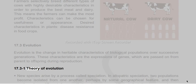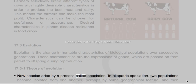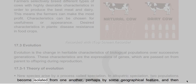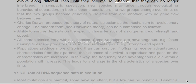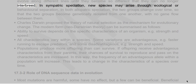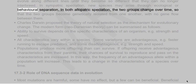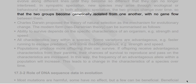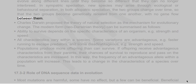New species arise by a process called speciation. In allopatric speciation, two populations become isolated from one another, perhaps by some geographical feature, and then evolve along different lines until they can no longer interbreed. In sympatric speciation, new species may arise through ecological or behavioral separation. In both forms, the two groups become genetically isolated from one another with no gene flow between them.